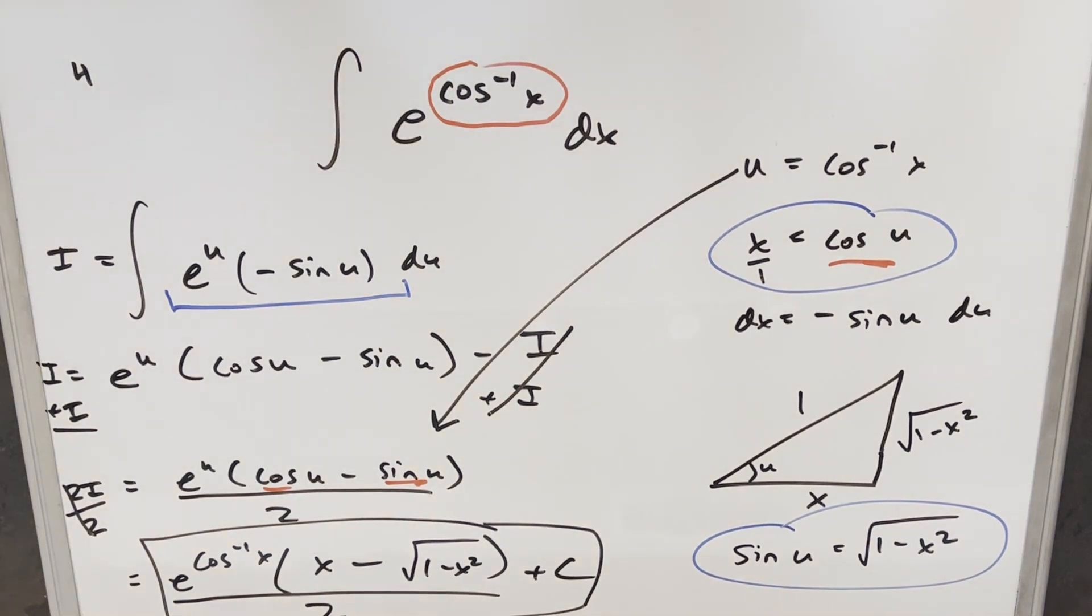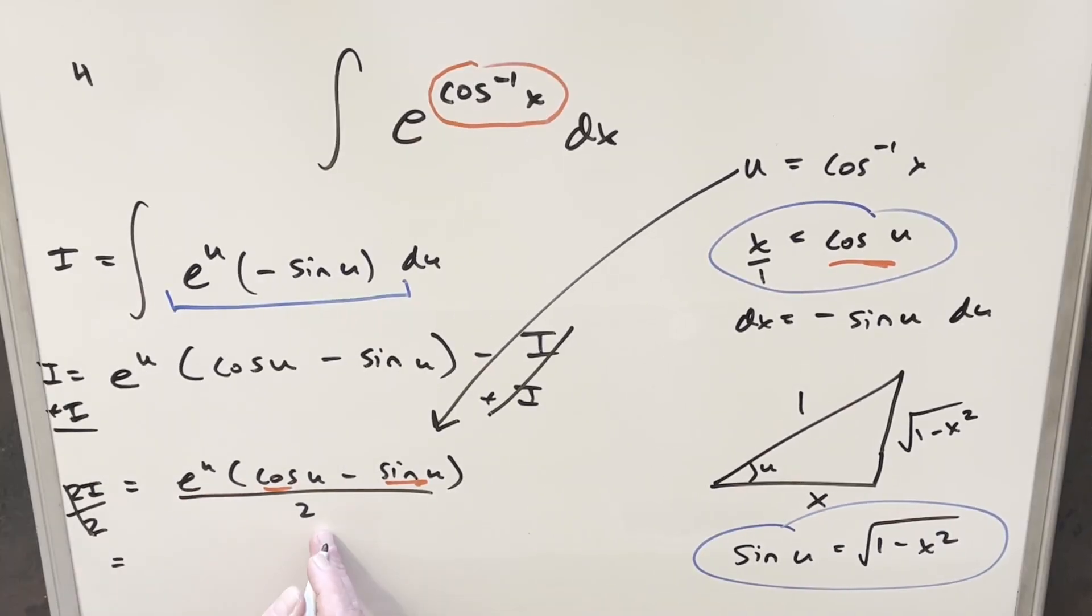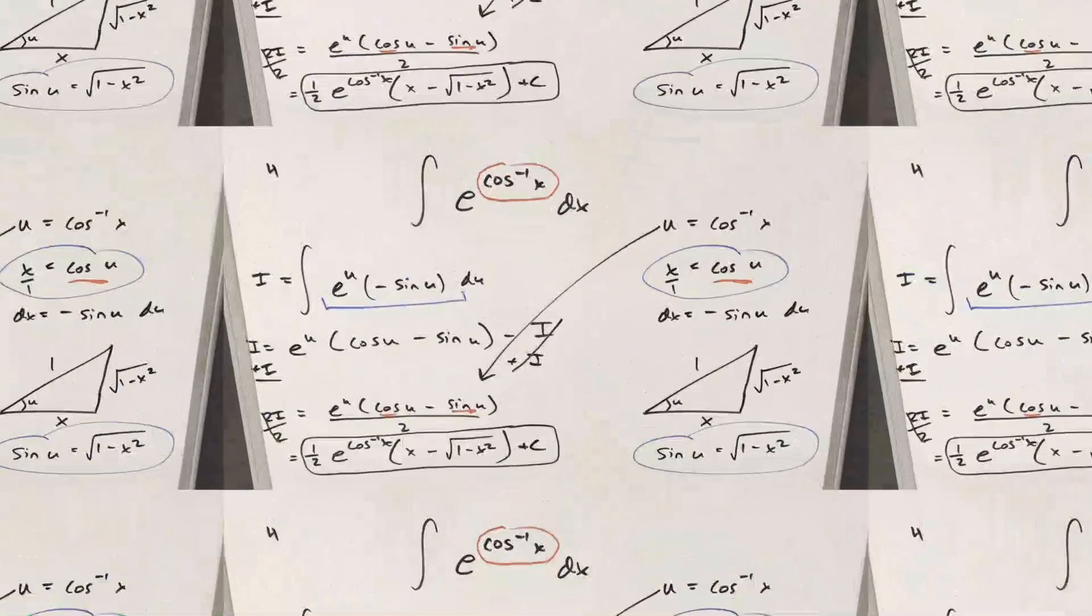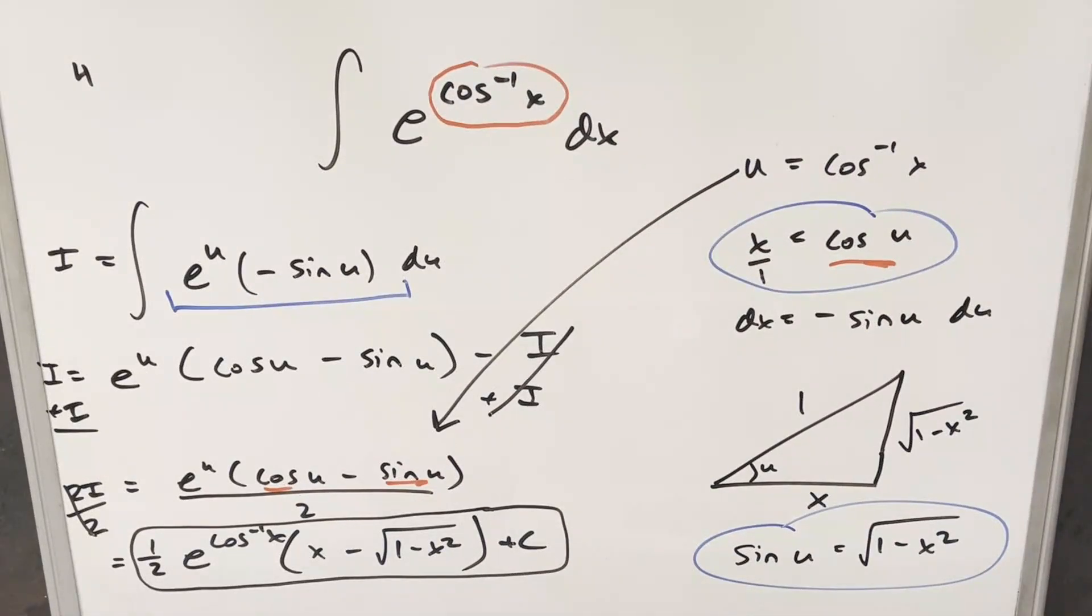Oh, the 2 got cut off. So in order to save some space, I'm actually going to take this 2 and bring it in front and write it as 1 half. And then here, plugging in our u, this is going to be e to the arccos x. Cosine of u is going to be just x minus square root of sine u, which is going to be square root of 1 minus x squared, add a plus c, and that's it. Okay, there you have it. Good problem from MIT 2006. Thanks everyone for watching today. Have a good day.